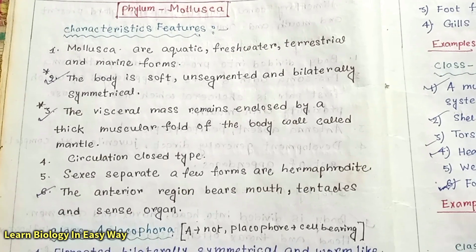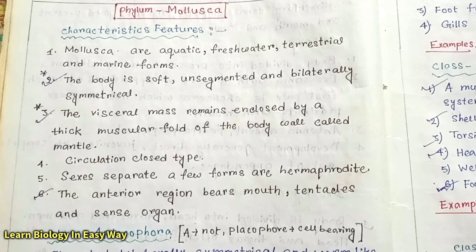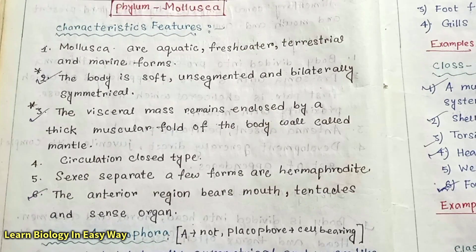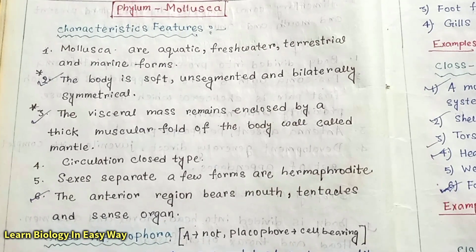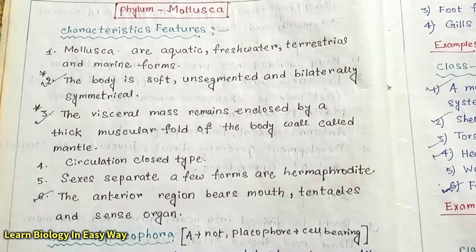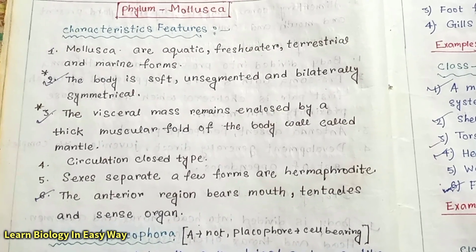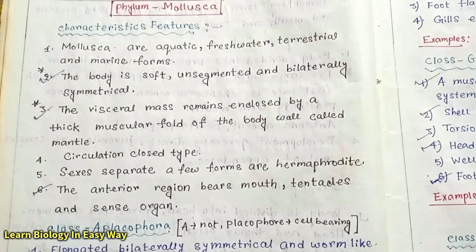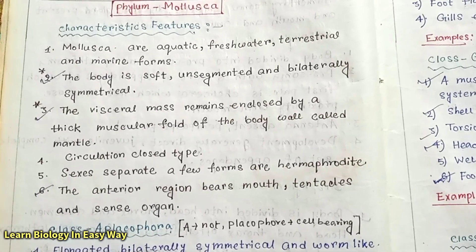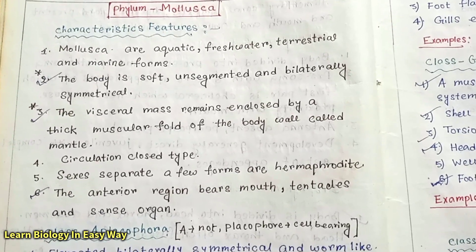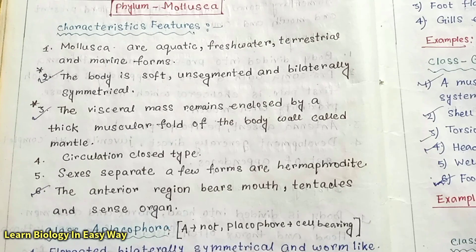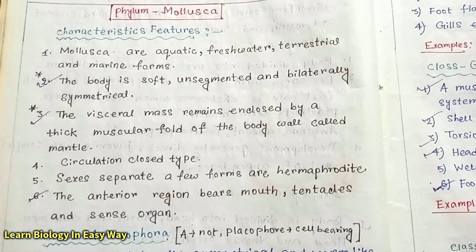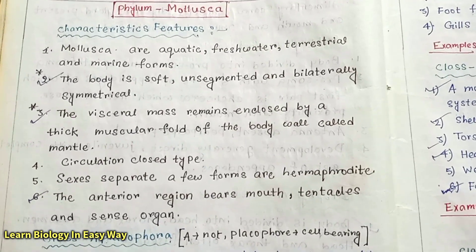Mollusca are aquatic, fresh water, terrestrial and marine forms. The body is soft, unsegmented and bilaterally symmetrical. The visceral mass remains enclosed by a thick muscular fold of the body wall called mantle.